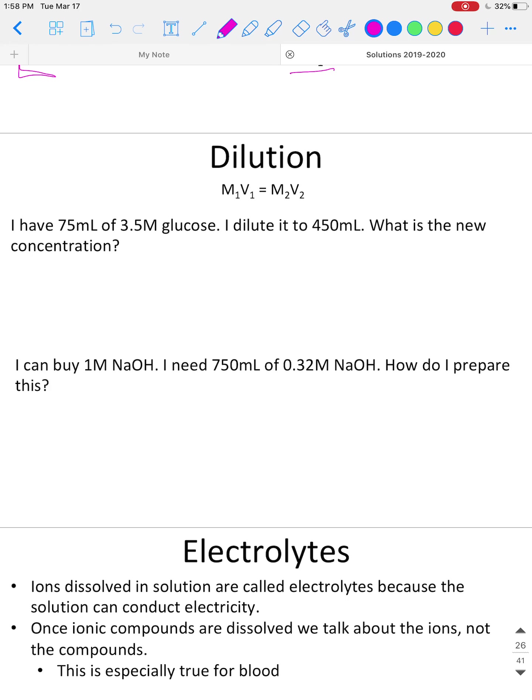Here's two dilution problems. The first one says: I have 75 milliliters of 3.5 molar glucose. I dilute it to 450 milliliters. What is the new concentration? So I encourage you again, work this ahead of me, work it with me. Get some paper and pencil out. Don't just watch me work it. The first thing I'm going to do is go through and label these numbers with their units. Identify what is M1, V1, M2, V2—what do I have and what am I looking for?